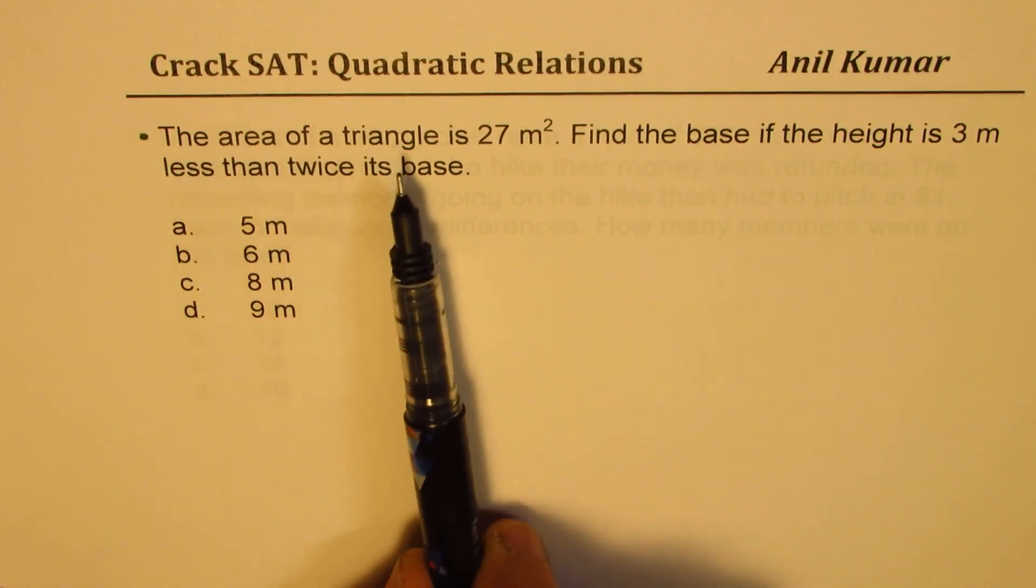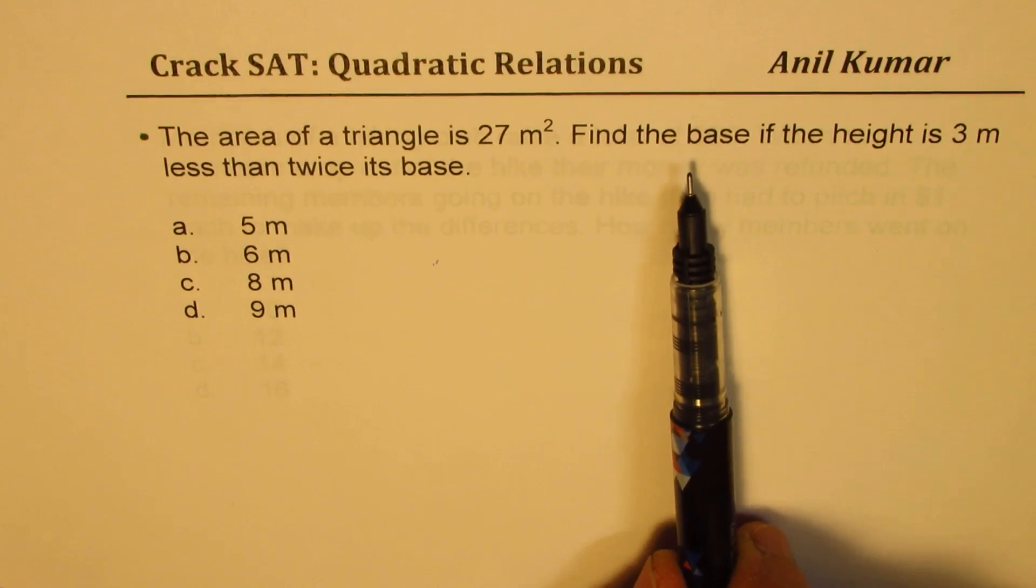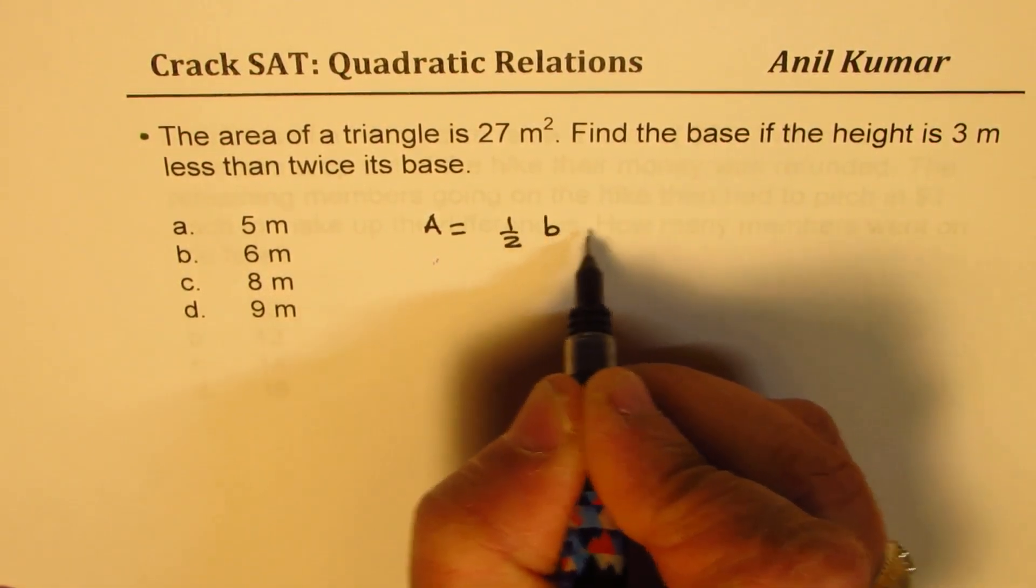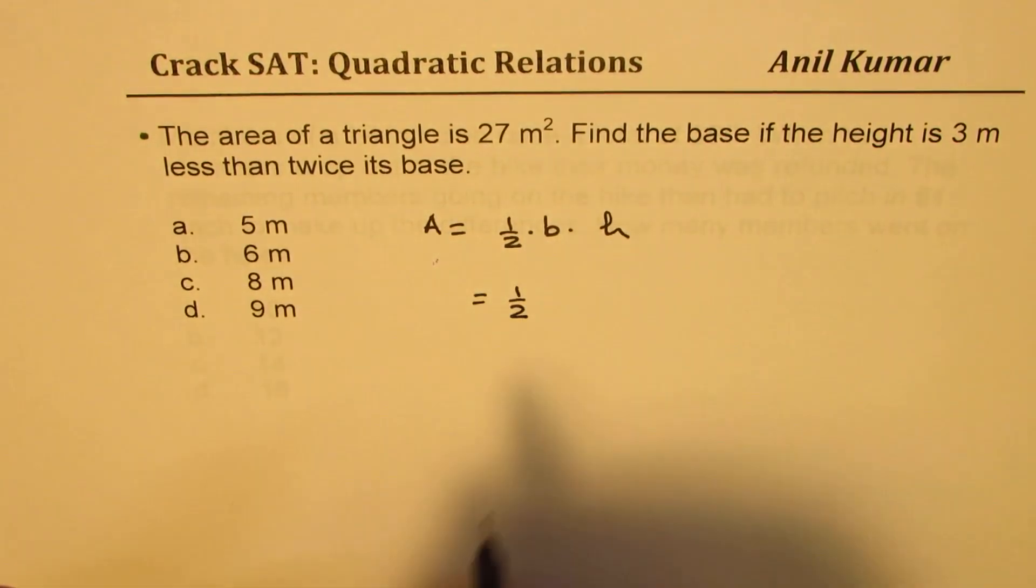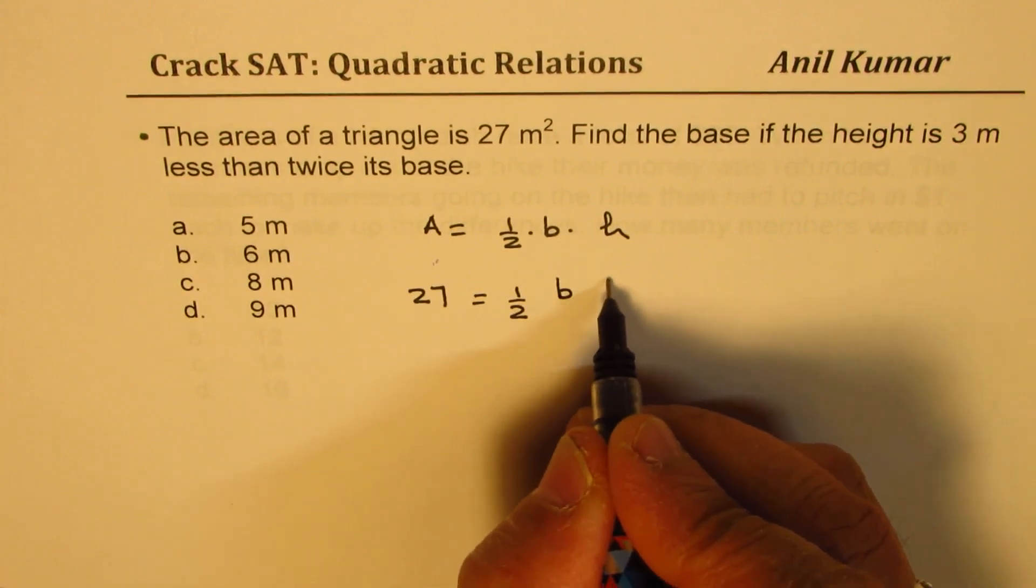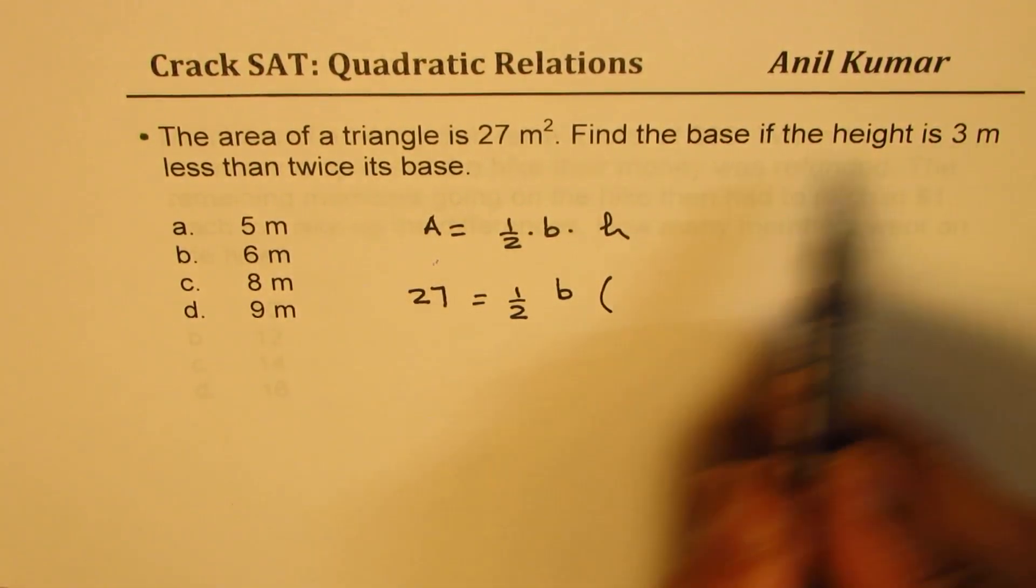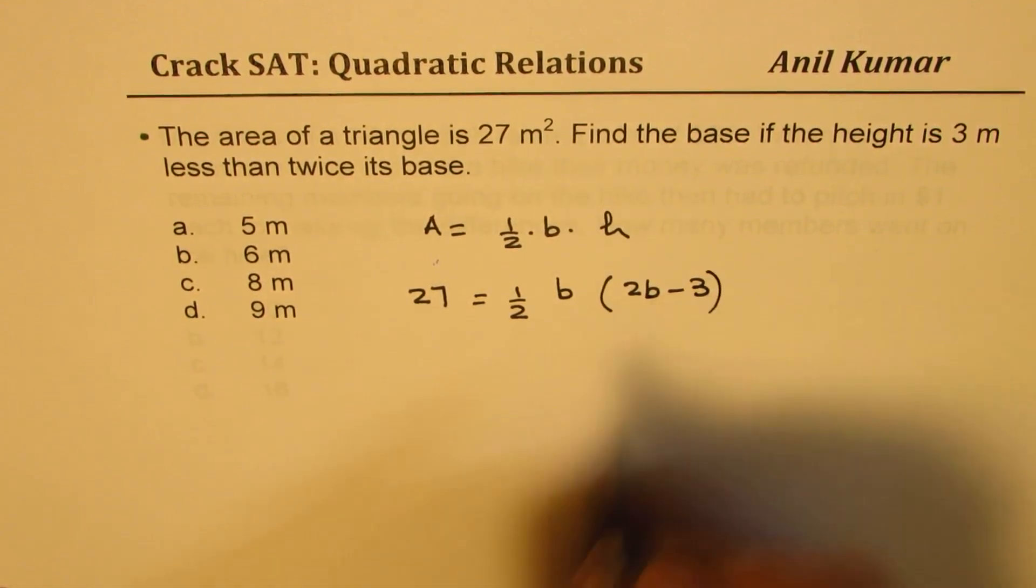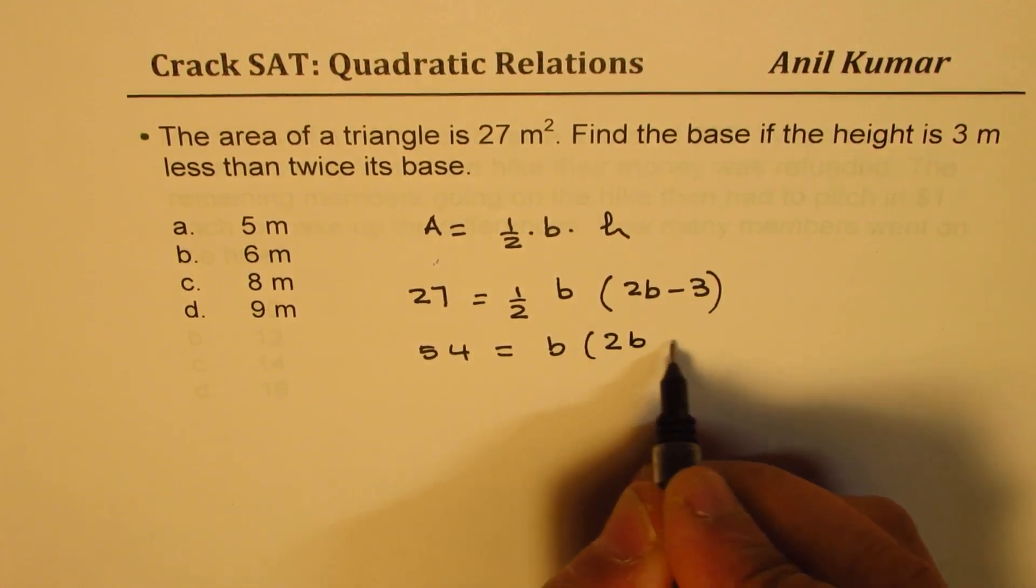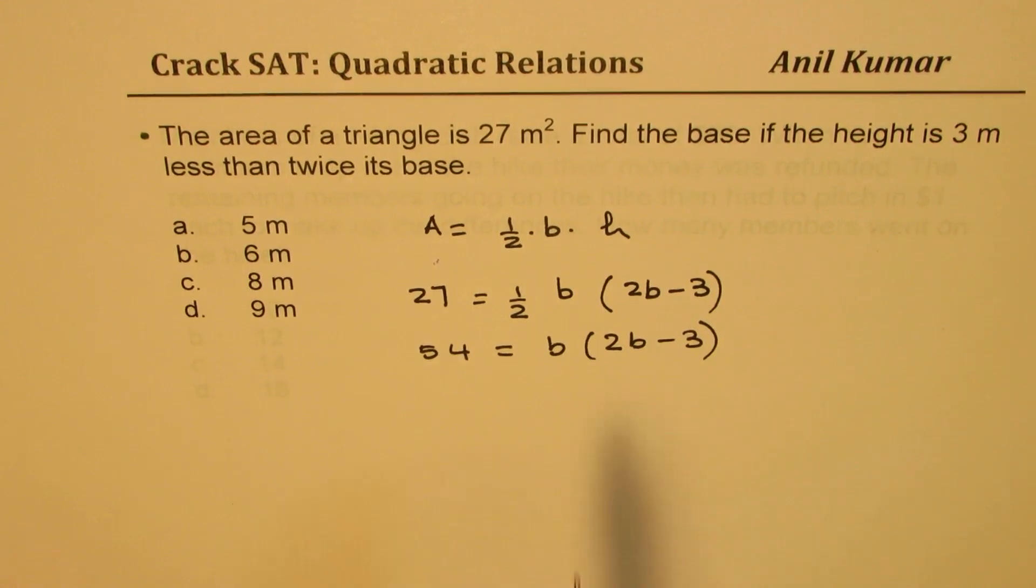This is for you to practice. The area of a triangle is 27 meters square. Find the base if the height is 3 less than twice the base. So we know area equals half base times height. So what we are given here is area is 27, find the base if the height is 3 less than twice the base. So base is b which we need to find, and height is 3 less than twice b, so 2b minus 3. That gives you the equation. So you could actually cross multiply, you get 54 equals b times 2b minus 3.